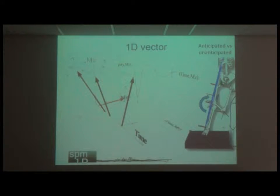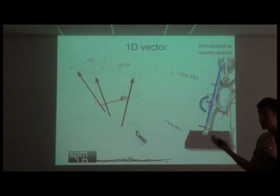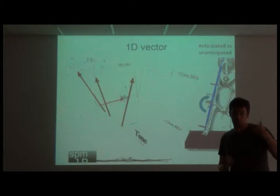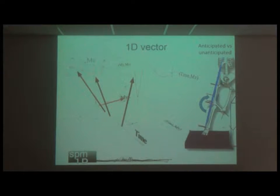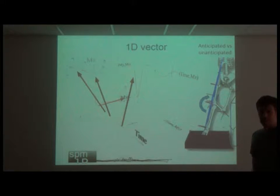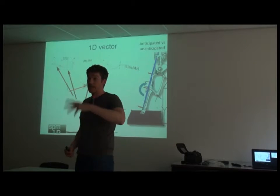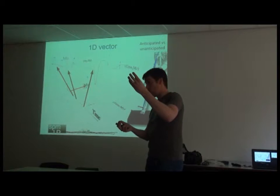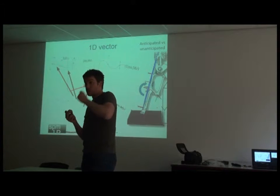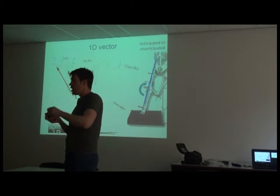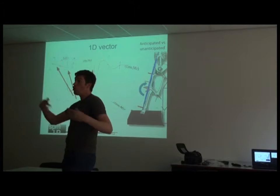I'm going to briefly skim over this. I've explained this in the context of a one-dimensional data set with these three examples, but you have to remember the technique is ultimately an n-dimensional technique. So when we think about a 1D vector, what we have is a vector over time, and a vector could be a ground reaction force with its three components. It's a vector where the components are not independent of each other — it's possible to vary just one thing, which is the magnitude of the vector, and have variation in all three components.